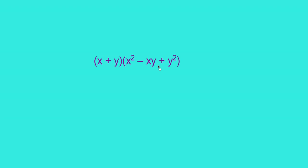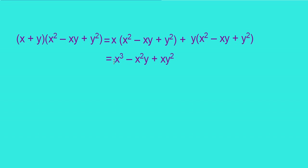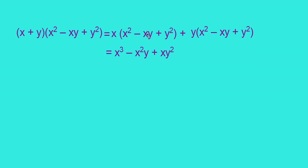Can you find x plus y into x squared minus xy plus y squared? Here it is a multiplication of a binomial by a trinomial. First, multiply x squared minus xy plus y squared by x and then by y. That gives x into x squared minus xy plus y squared, plus y into x squared minus xy plus y squared. Multiplying all three terms by x: x into x squared is x cubed, x into minus xy is minus x squared y, x into y squared is xy squared. Similarly, y into x squared is yx squared, y into minus xy is minus xy squared, y into y squared is plus y cubed.